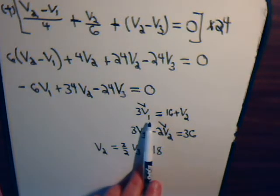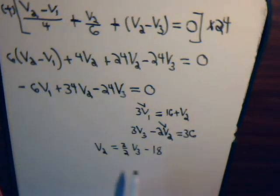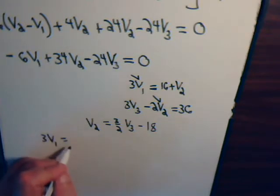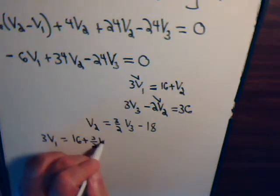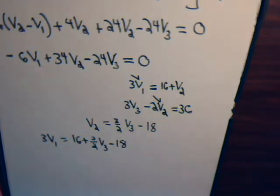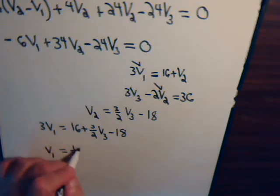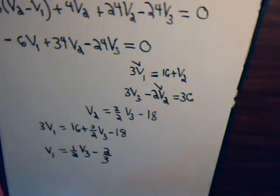Now let's look at this equation. Here we have 3 times V1 equals 16 plus V2. But we can substitute for V2 this expression. So what we have then is 3 times V1 equals 16 plus V2, which is this, 3 halves V3 minus 18. So we have V1 equals 1 half times V3 minus 2 thirds. 16 minus 18 is negative 2. And then we go ahead and divide through by 3. 3 divided by 6 is 1 half.